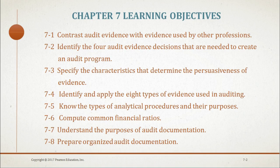At the end of Chapter 7, you should be able to do the following: contrast audit evidence with evidence used by other professions; identify the four audit evidence decisions needed to create an audit program; specify the characteristics that determine the persuasiveness of evidence; identify and apply the eight types of evidence used in auditing; know the types of analytical procedures and their purpose; compute common financial ratios; understand the purpose of audit documentation; and prepare organized audit documentation.